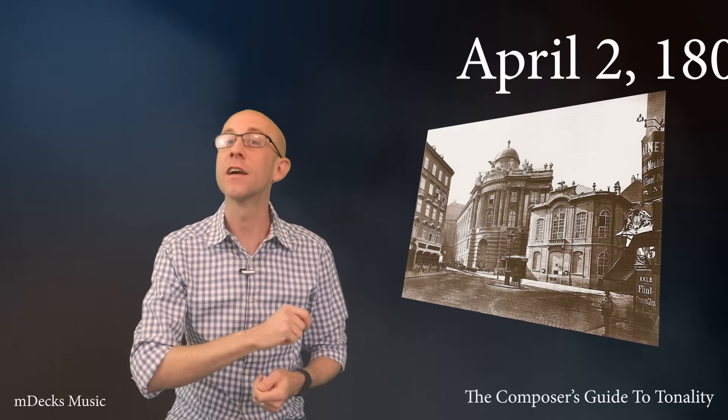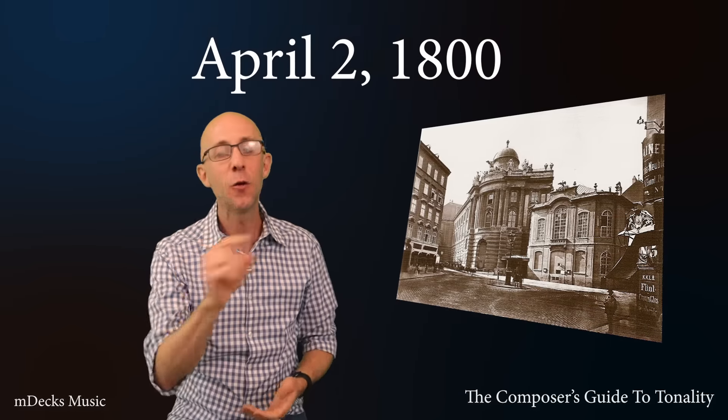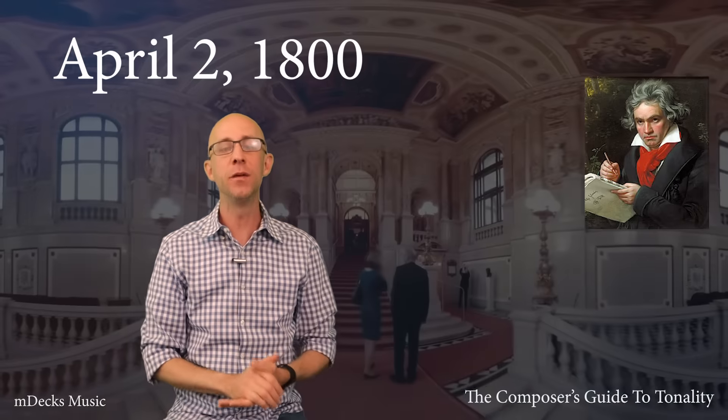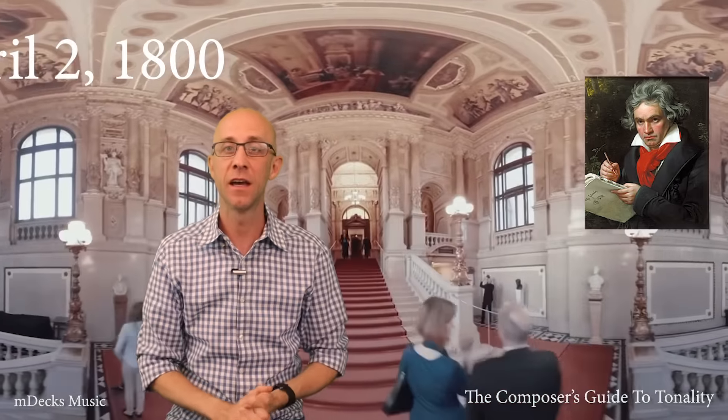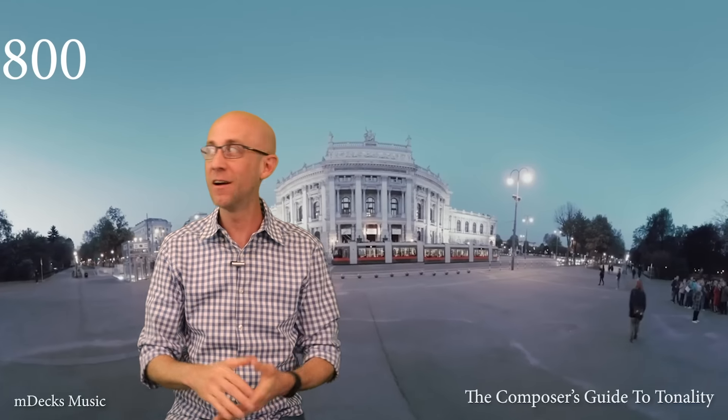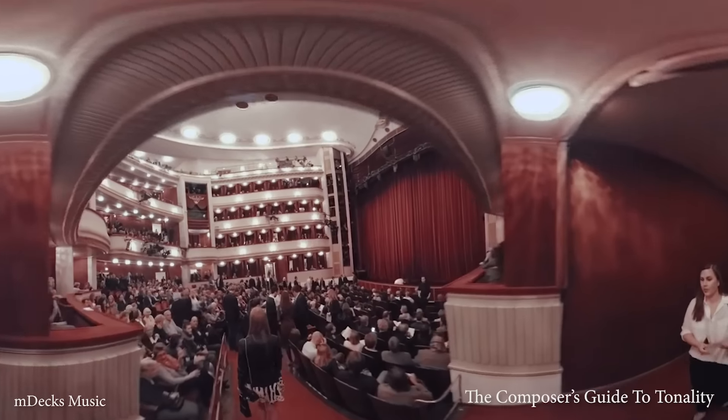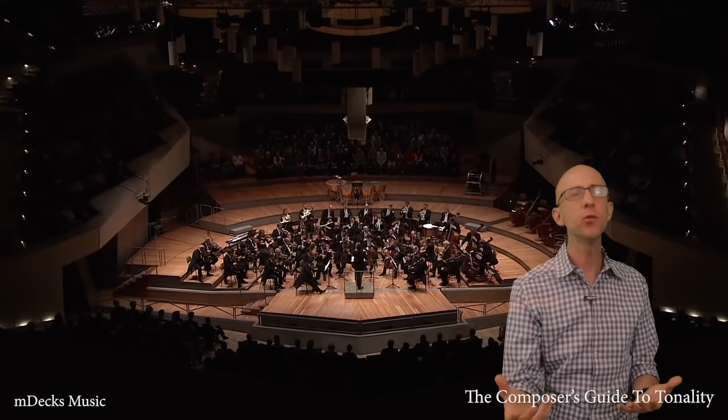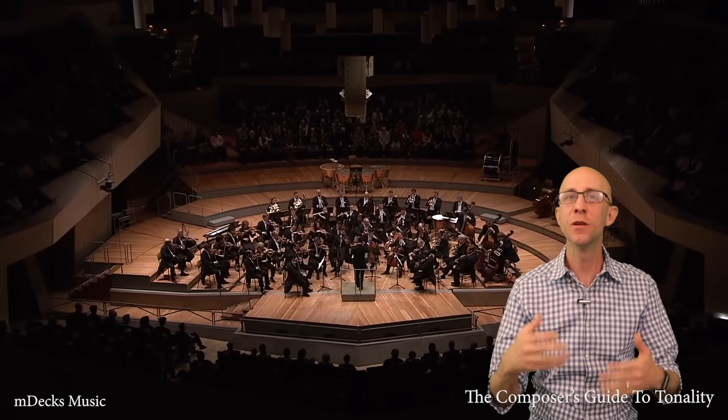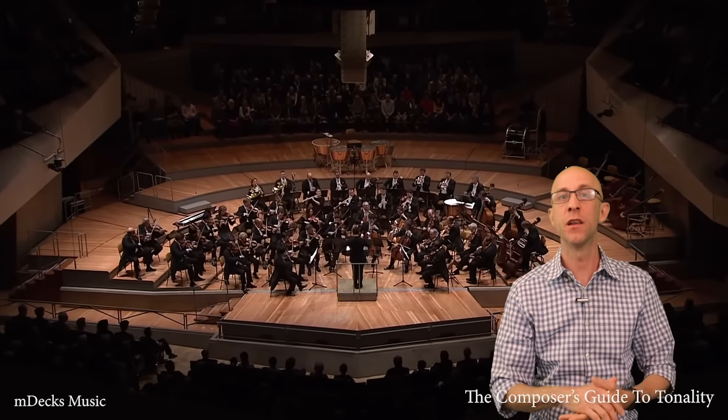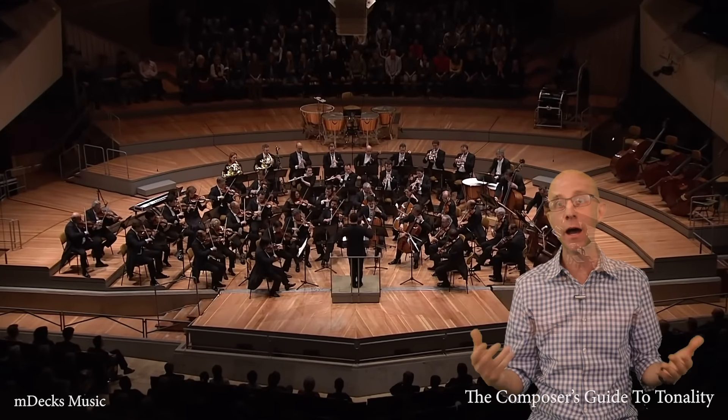Imagine it's April 2nd, 1800, and you're about to see the premiere of Beethoven's first symphony at the Berg Theater in Vienna, Austria. To understand what's about to happen, you also have to imagine the hits you've been listening to by the likes of Mozart or Haydn.